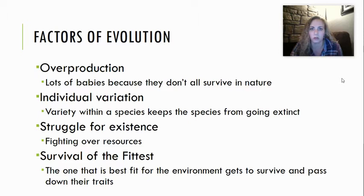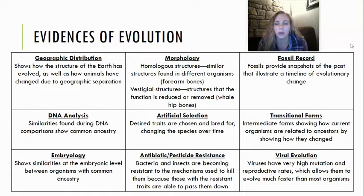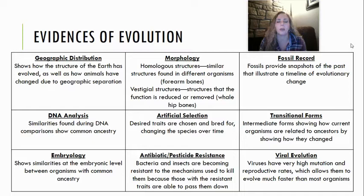I'm not going to go too in-depth on all of these evidences of evolution — you have this information in your packet. There are nine main evidences that we talked about in class. Geographic distribution shows us a big picture of how the Earth has changed — how we have that one super continent like Pangea, where all the continents were together before they spread out. It also gives us an idea of how animals got separated during that process and therefore changed based on that geographic separation.